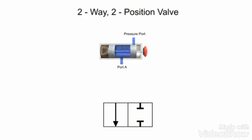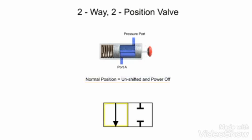Next, lines are drawn to indicate the normal position of the valve. The normal position is defined as the position of the valve when its spool is unshifted and the power is off. This means that any mechanical actuators, such as springs, are in their non-actuated positions, and electrical actuators, such as solenoids, are powered off. The normal position can sometimes be referred to as the unshifted, de-energized, or unactuated position. In this case, position one is the normal position. Therefore, the lines to indicate the normal position are drawn in the first box.